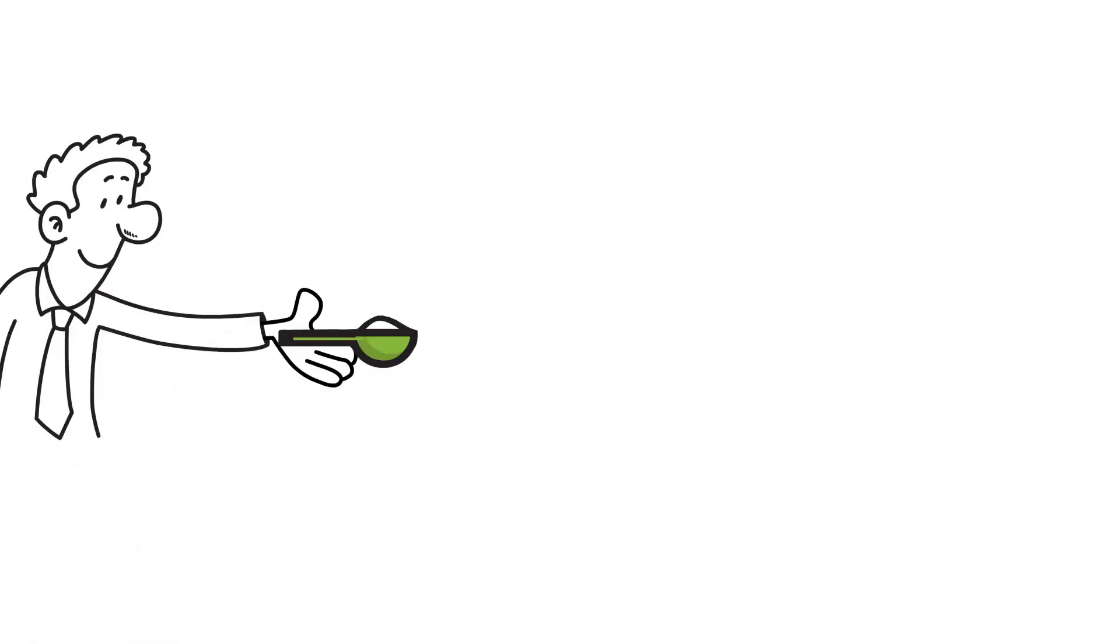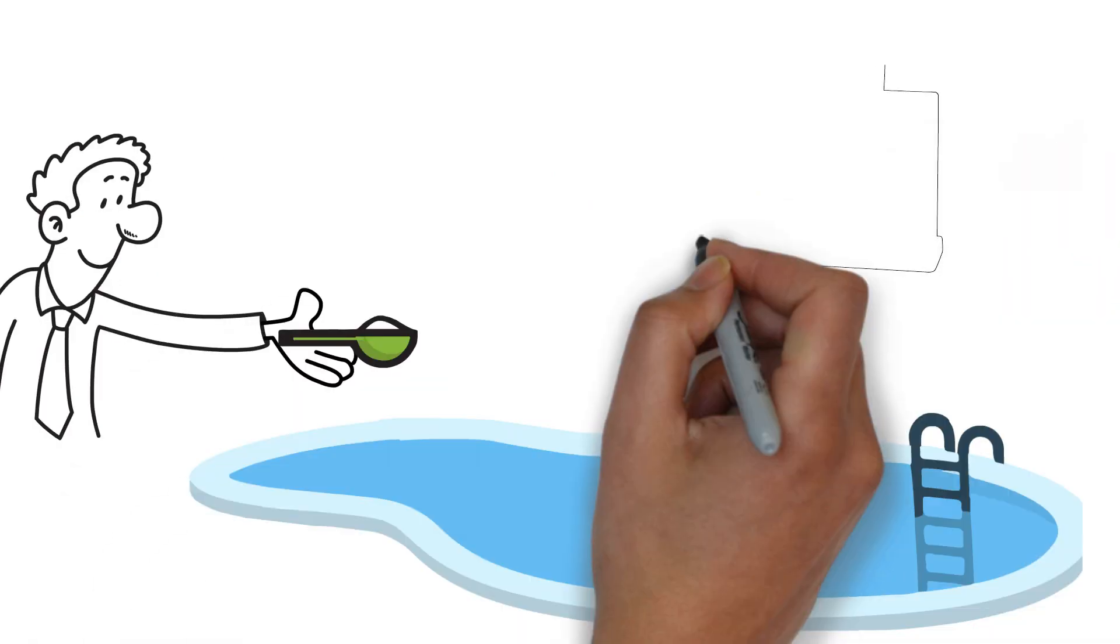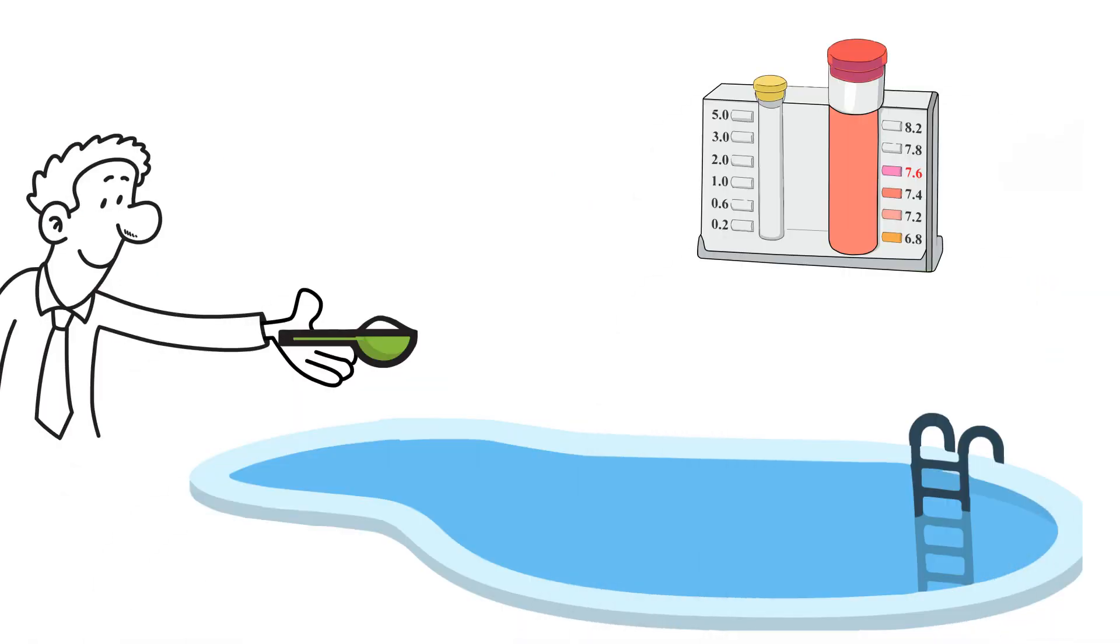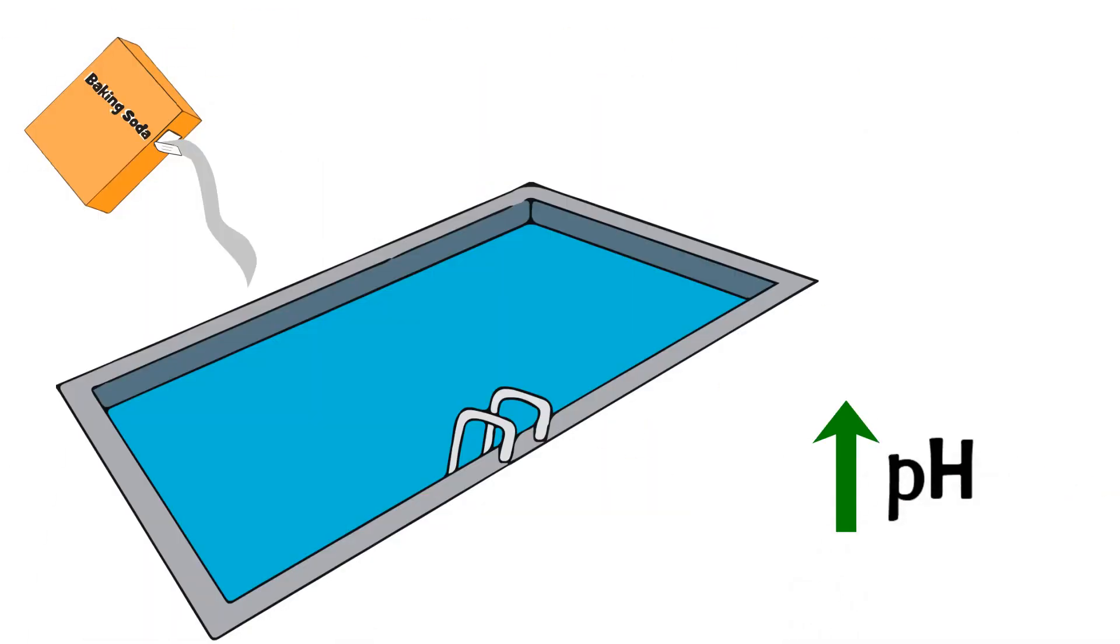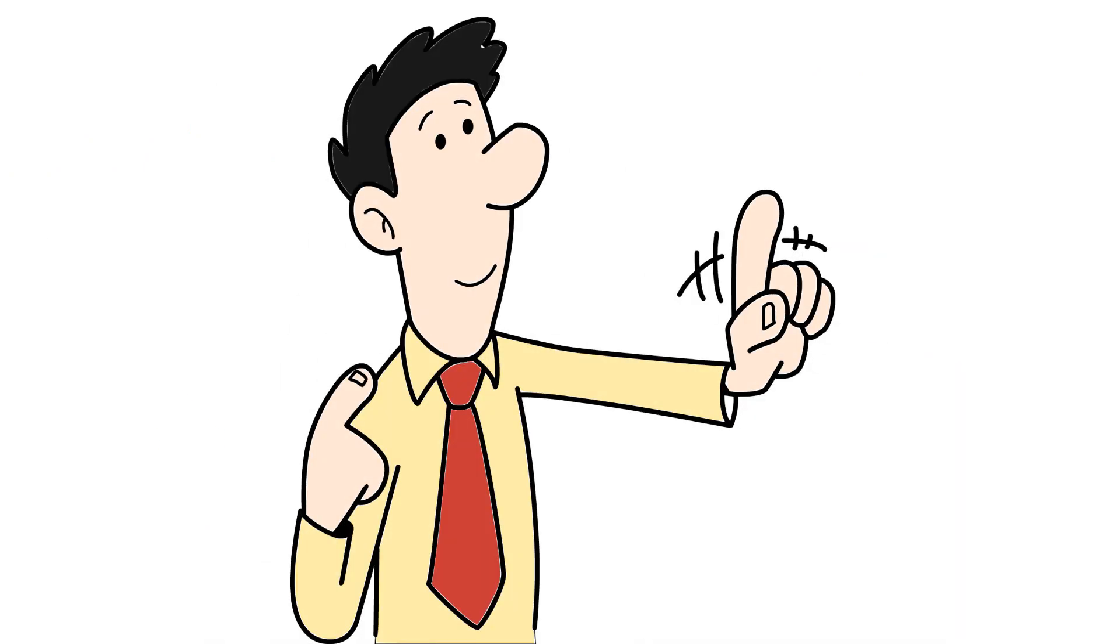A user should add a portion of the baking soda, then test the water and repeat this until the user has hit the desired level. This is because adding large quantities of baking soda can raise the pH a little and you don't want the pH going out of range.